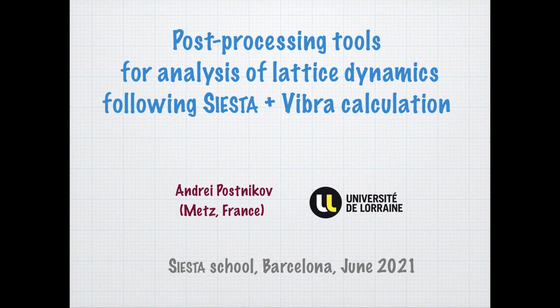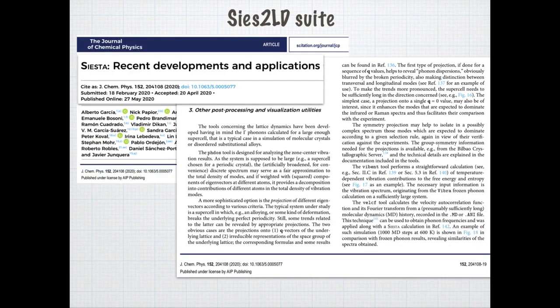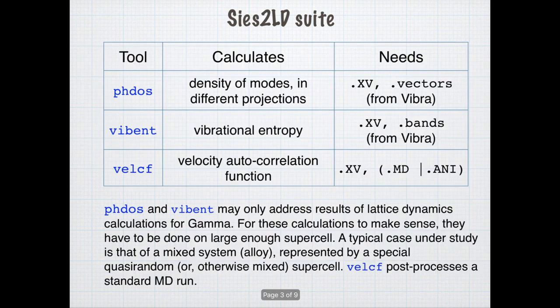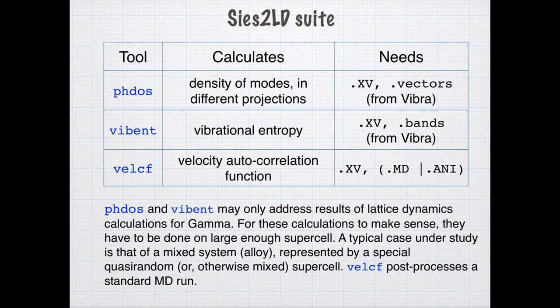Now we will discuss a set of tools aimed at extracting information related to lattice dynamics and phonons from Siesta calculation and subsequent Vibra calculation. These tools have been mentioned in a recent publication on new Siesta developments in the Journal of Chemical Physics. In this suite of tools which is labeled CS2LD, there are three main tools and a short number of technical utilities.